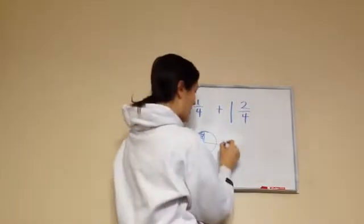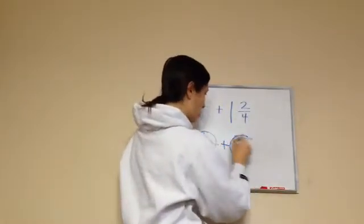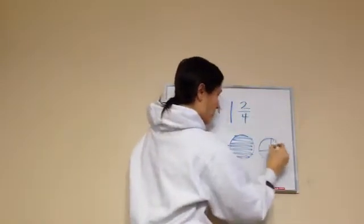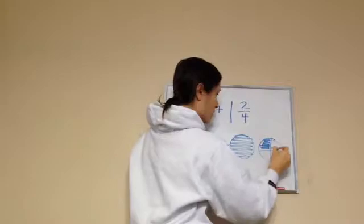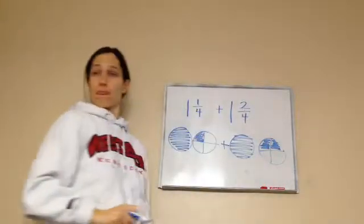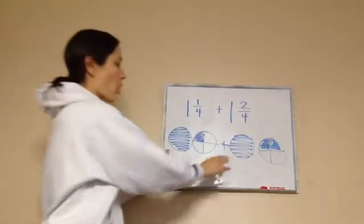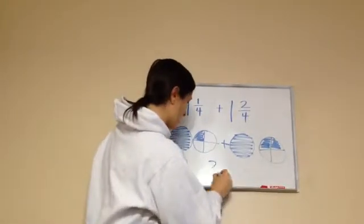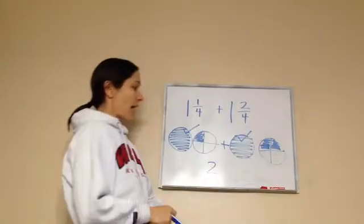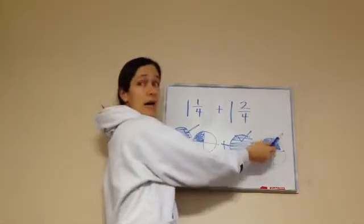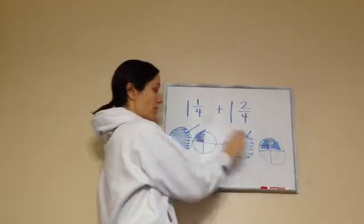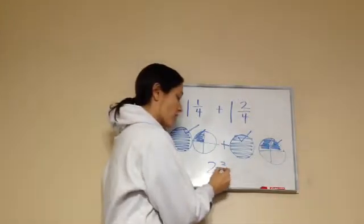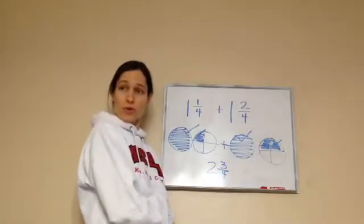Plus, I have one whole pie and two-fourths. One, two. Now, how many whole pies do I have all together? Two. I have two whole pies. One, two. And then, how many pieces of pie do I have left? Three. One, two, three out of four. Very good. So, my final answer would be two and three-fourths.